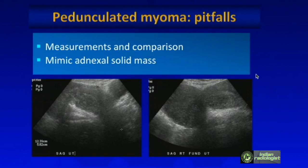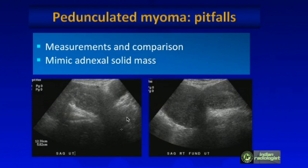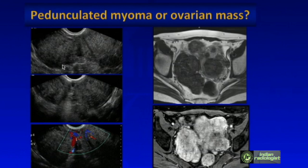There are pitfalls with pedunculated myomas — be careful about how you measure them and whether they're included in measurements. I have seen people miss exophytic pedunculated subserosal fibroids that are very lateral because they don't scan superiorly enough. It's always important to scan above the uterus to make sure we don't miss large subserosal fibroids. Those in the broad ligament can mimic a solid adnexal mass such as an ovarian fibroma. Bridging vessels going from the uterus into the lesion may suggest a pedunculated fibroid, but MRI is really helpful in these cases.